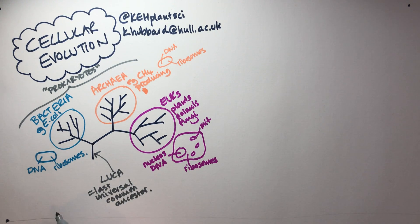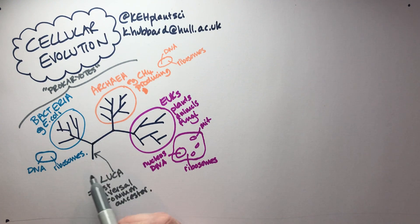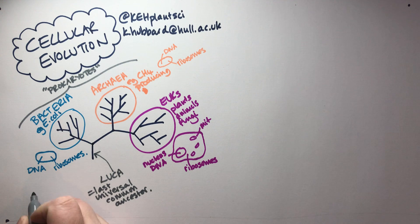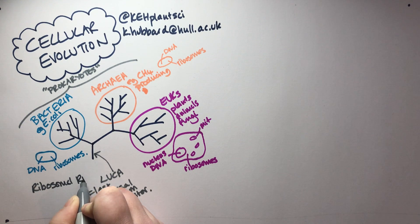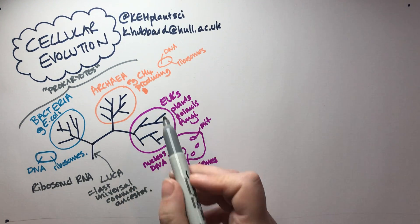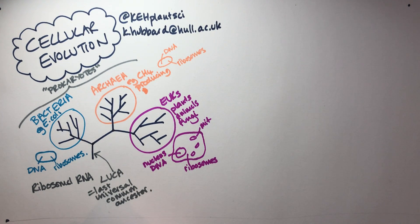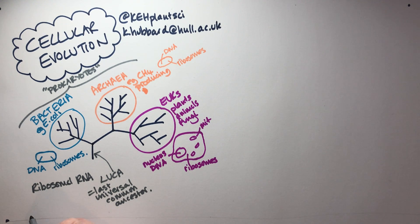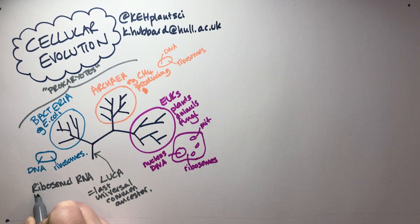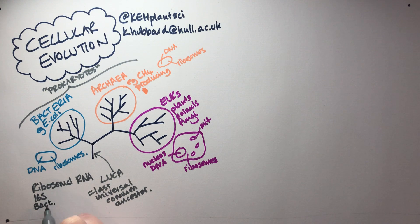We know they're all related because we're able to construct these trees based on all organisms sharing the same sequence. All evolutionary trees need some sort of genetic sequence to construct them, and for this universal tree of life the sequence is based on ribosomal RNA. The ribosome is made up of RNA and protein, and the particular RNA sequence used to construct the tree is known as the 16S RNA in the bacteria and the archaea.